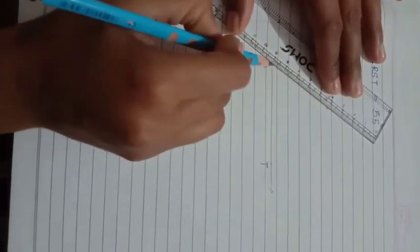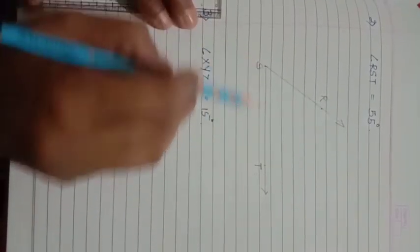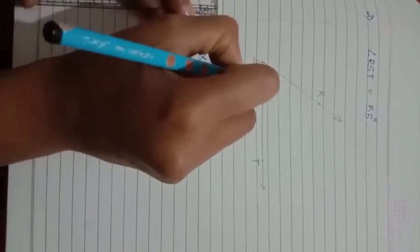And name it as point R. Then I am going to join this point R with point S using a ruler. So this is your angle RST which is 55 degrees.